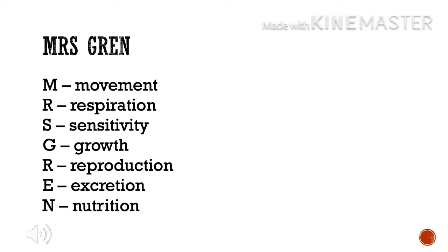Again, MRSGREN: M for movement, R for respiration, S for sensitivity, G for growth, another R for reproduction, E for excretion, and N for nutrition. Don't forget, a living organism can only be considered a living organism if it satisfies the seven characteristics of living organisms. Thank you.